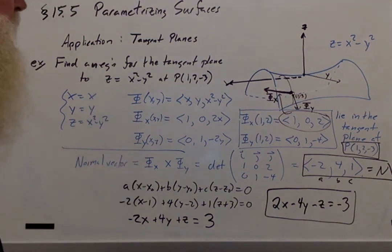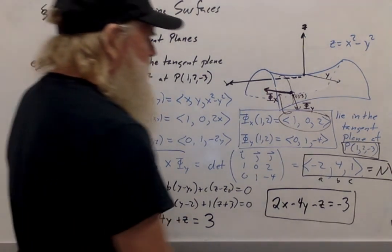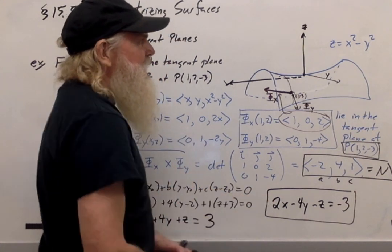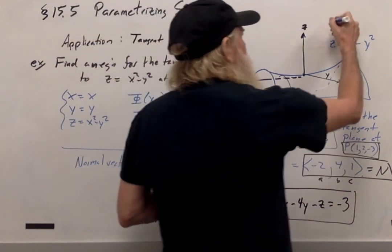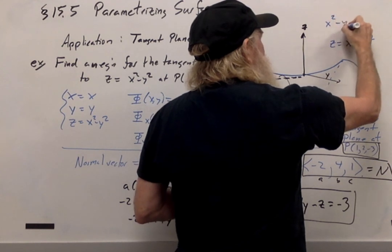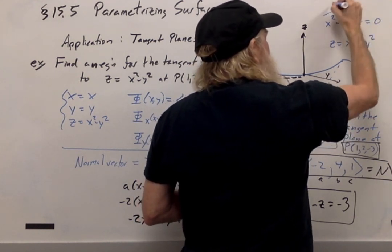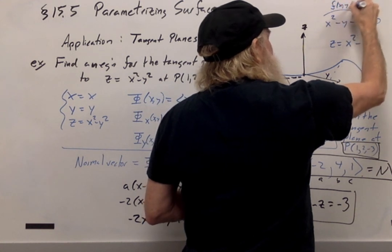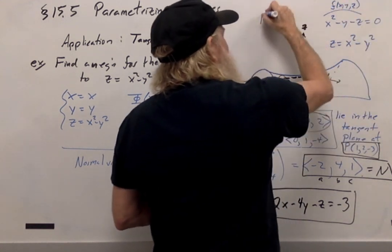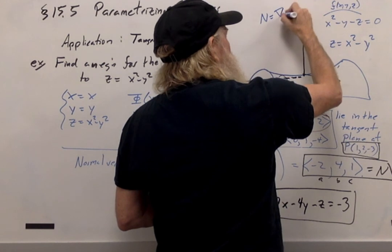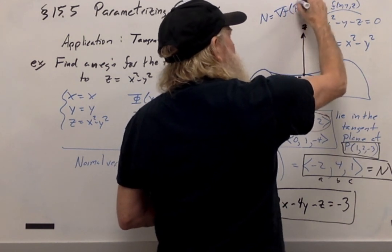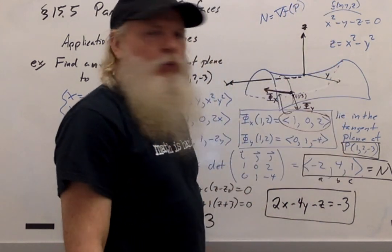But before I leave, just a quick reminder. It is easier to get this answer using gradients, and I encourage you to go back and rewrite this in the form x squared minus y squared minus z equals 0. Call this guy f of (x, y, z), and verify that you can get a normal vector by taking the gradient of f and evaluating it at the point P, (1, 2, -3).